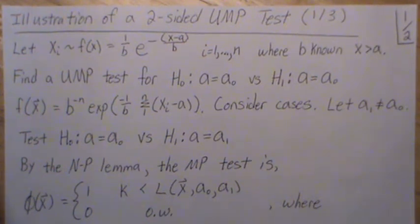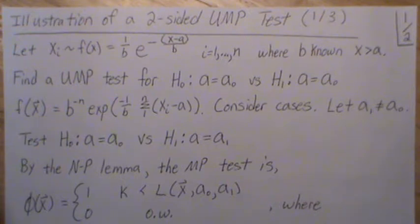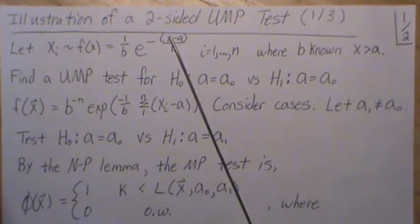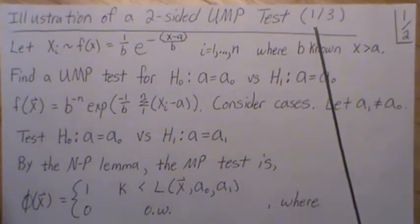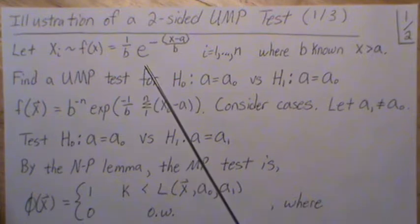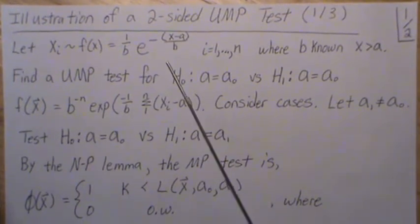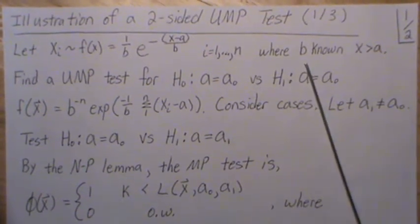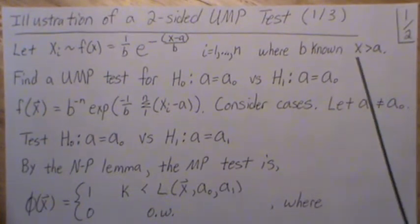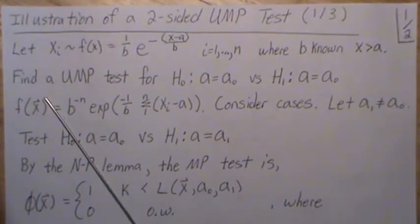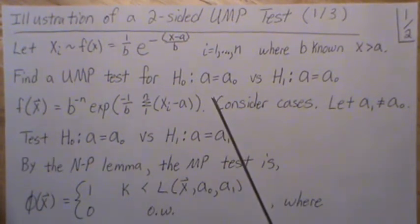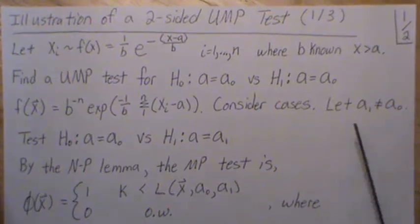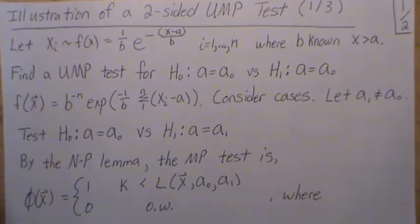Hello, this is the next video in a playlist that I'm calling hypothesis testing. This is a little three-part mini-series where we're going to do an illustration of a two-sided uniformly most powerful test. This is part one of three. Here we're going to let Xi be a shifted exponential distribution with sample size n, b is known, and x is greater than a. So let's find a uniformly most powerful test for this two-sided test: is A equal to A-naught, or is A not equal to A-naught?